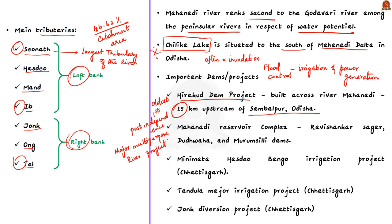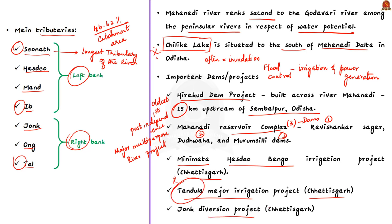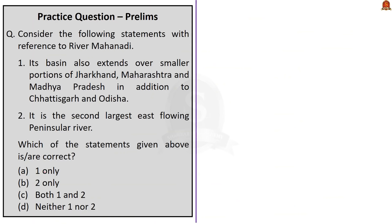Other important projects on the Mahanadi include the Mahanadi Reservoir Complex, comprising three dams: the Ravishankar Sagar, Dudhawa, and Murumsili Dam. Apart from this, the Minimata Hasdeo Bango irrigation project of Chhattisgarh is situated in the Hasdeo river, the Tandula Major Irrigation Project of Chhattisgarh is located in the Tandula river, and the Jonk Diversion Project of Chhattisgarh are also notable projects.